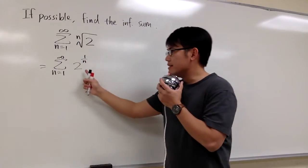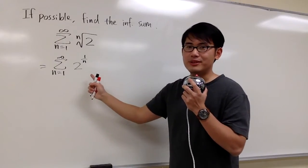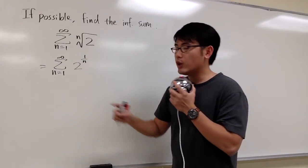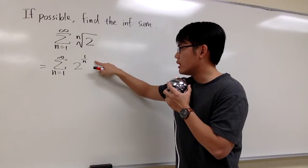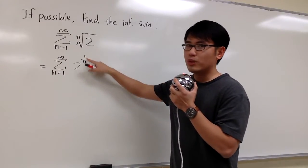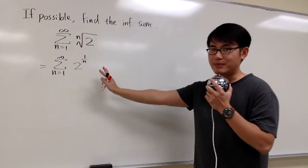But then, is this a geometric series? This is not a geometric series. Because for geometric series, we must have n in the power, unfortunately this is 1 over n in the power, so this is bad.